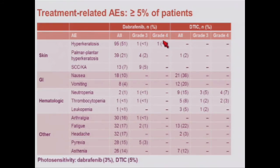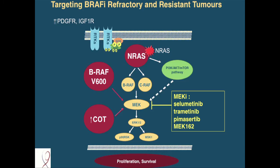One interesting thing about dabrafenib and its side effects is pyrexia. About 28% of patients will get fever with this drug. You can give drug holidays or modify the doses, and they're all manageable. But as you saw, not every patient responded with dabrafenib or vemurafenib. Some patients responded beautifully and then relapsed — half the patients relapsed within six and a half months. So there are mechanisms of resistance, and there are patients who, while they're on therapy, become refractory to the drug.